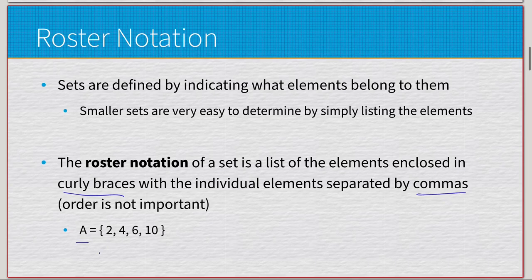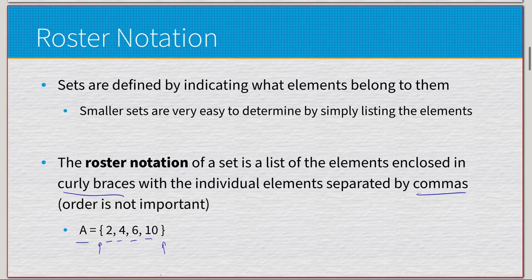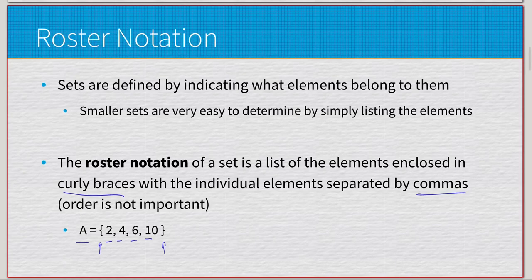For example, set A in curly braces contains two, four, six, and ten, separated by commas. This indicates set A contains those four elements, and the order is irrelevant — so A equals four, six, two, ten would be the same thing, as would ten, two, six, four.